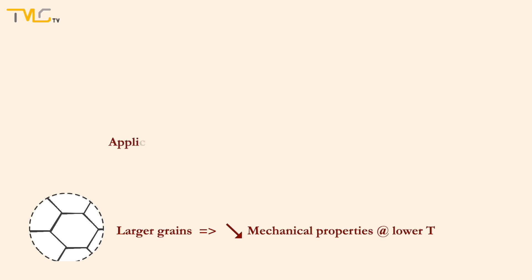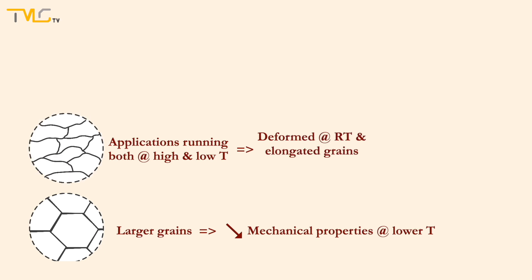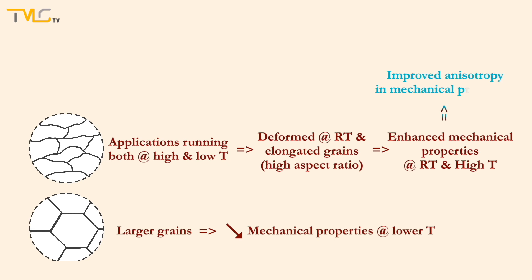In case the metal is used at both high and low temperatures, then it should be deformed at room temperature to elongate the grains for having high aspect ratio. Then, this metal will offer improved mechanical properties both at room temperature and at elevated temperatures, enhancing both creep properties and mechanical performance. So, it should be kept in mind that this modification will lead to high anisotropy in mechanical properties of the materials.